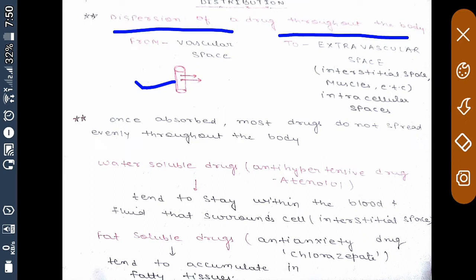Blood moves from vessels to extravascular space, that is interstitial space, muscles, or intracellular spaces. This is the basic mechanism behind the distribution of drug. Drug will move from vascular space to extravascular space.